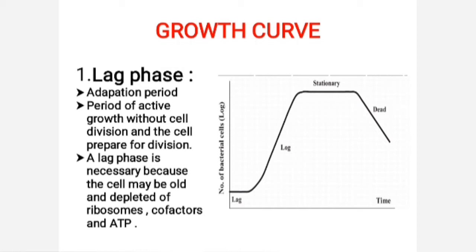The first is lag phase. When microorganisms are introduced into fresh culture medium, usually no immediate increase in cell number occurs — this period is called the lag phase. It is also called the adaptation period. A lag phase prior to the start of cell division is necessary for a variety of reasons, such as the cells may be old and depleted of ATP, ribosomes, and cofactors, and these must be synthesized before growth can begin.